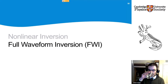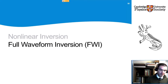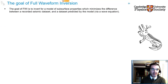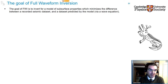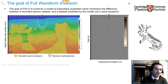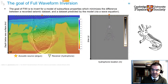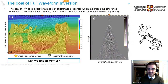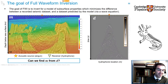Now we're going to look at a much more powerful and general form of inversion: non-linear inversion, specifically full waveform inversion, or FWI. The goal of FWI is to invert for a model of subsurface properties which minimises the difference between a recorded seismic data set and a data set predicted by the model via a wave equation. The question posed by FWI is: can we find the model M — for example a model of impedance or velocity — from the observed data D?